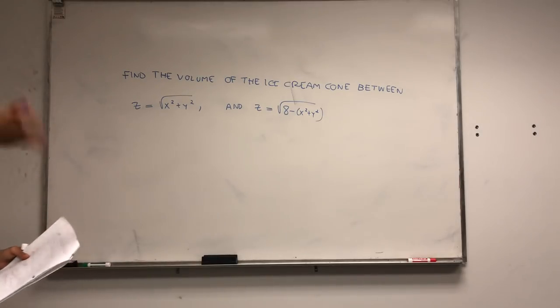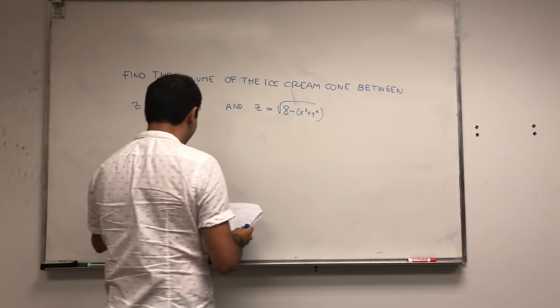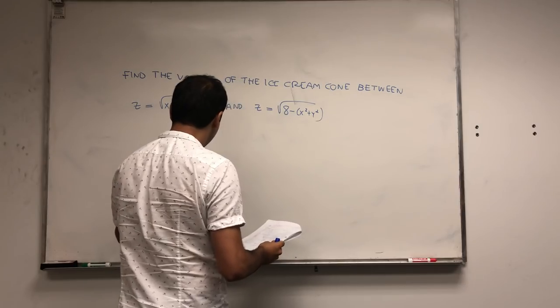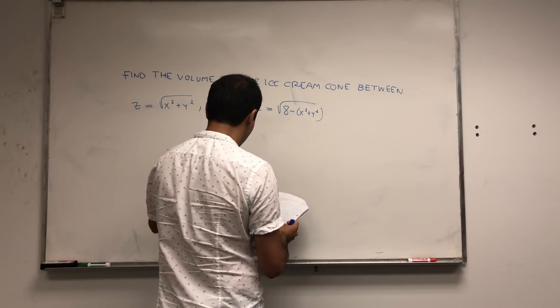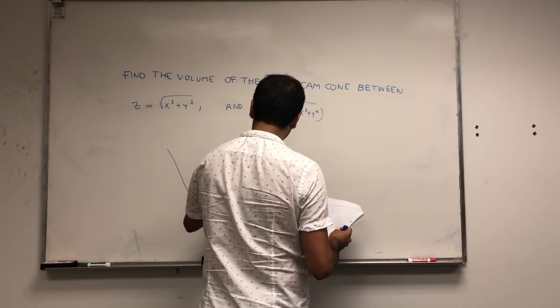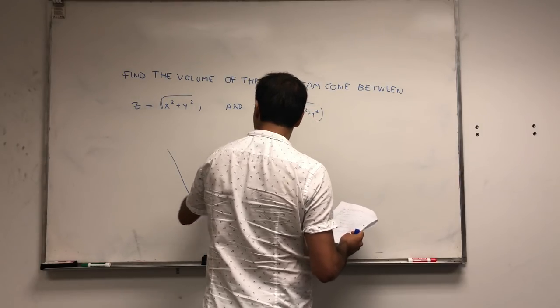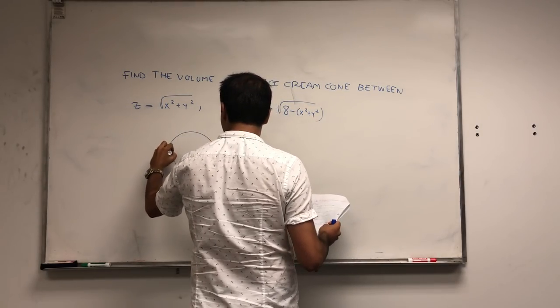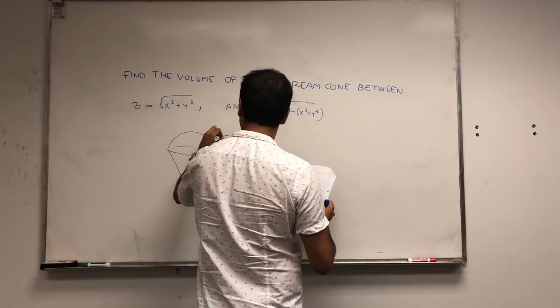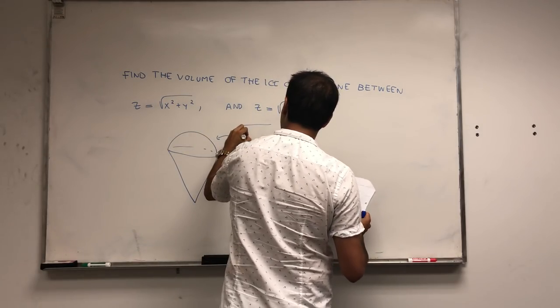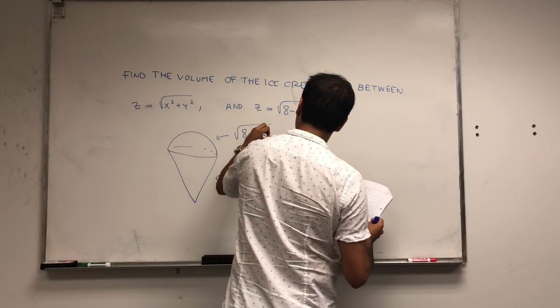I drew the picture in a previous video, but just to remind you, this is the cone part, that's square root of x squared plus y squared, and this is the ice cream part, this is square root of eight minus x squared plus y squared.